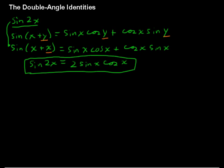Let's take a look at cosine of 2x. Cosine of 2x. Well, this again can be rewritten as cosine of x plus x. But first I'm going to look at cosine of x plus y.